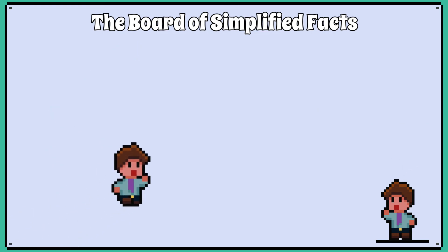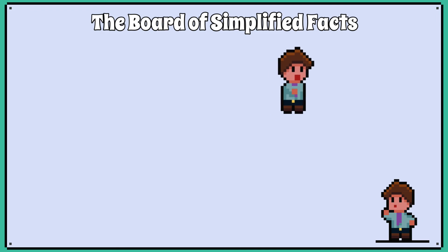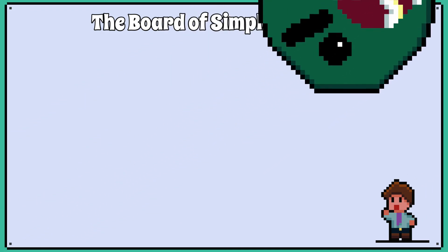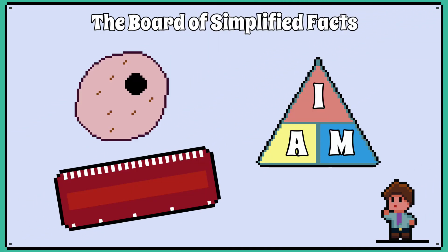So next time you look in a microscope, hopefully you will know how much bigger the microscope is making the object appear. In the next lesson we will take a closer look at calculations involving magnifications, drawing size, and actual sizes of cells.